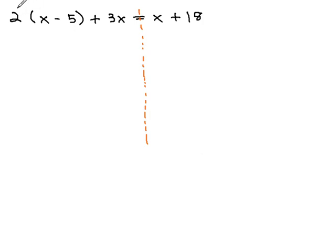We've seen a number in front of parentheses before. If there's a number in front of parentheses, we know we need to distribute it through. This will give us 2x minus 10 plus 3x equals x plus 18.